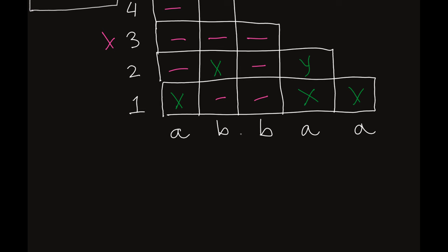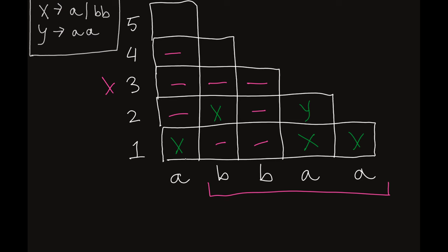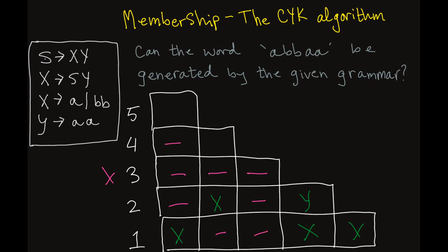Moving on to the next substring of length four: BBAA. This can be split as BB and AA. BB is a substring of length two — going up to row two, that can be produced by X. And AA is also a substring of length two — going up to row two, Y can produce AA. So we have X, Y. Looking at our grammar — we do have an S that can be replaced by X, Y. So we put S there.